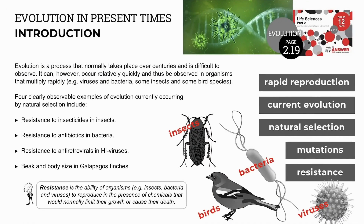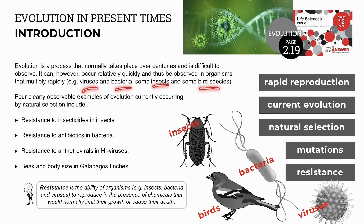We've already looked at evolution as a process that occurs over long periods of time. It's difficult to observe as scientists often rely on observations in history. However, rapid reproduction in some living species shows current evolution with natural selection over shorter periods of time. These are examples of microevolution, or evolution within a species — for example, viruses, bacteria, insects, and some bird species.